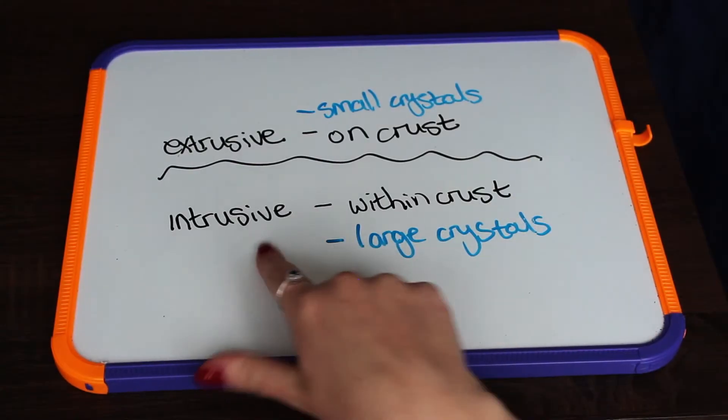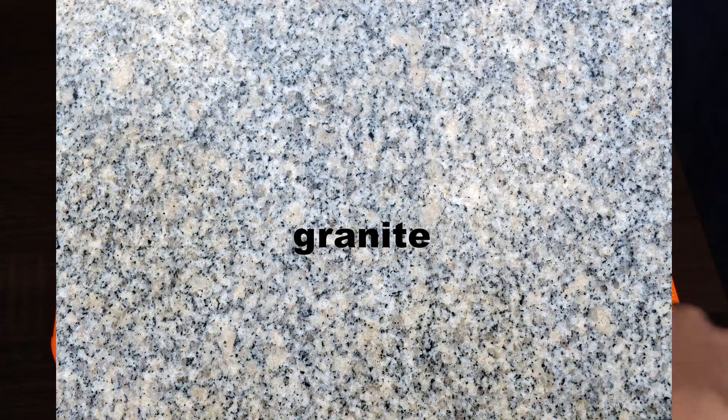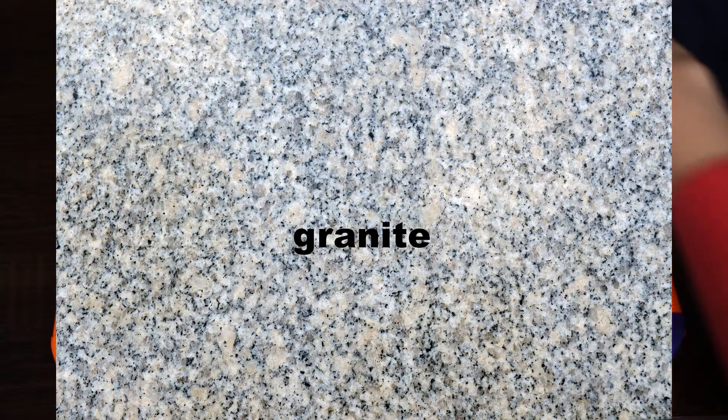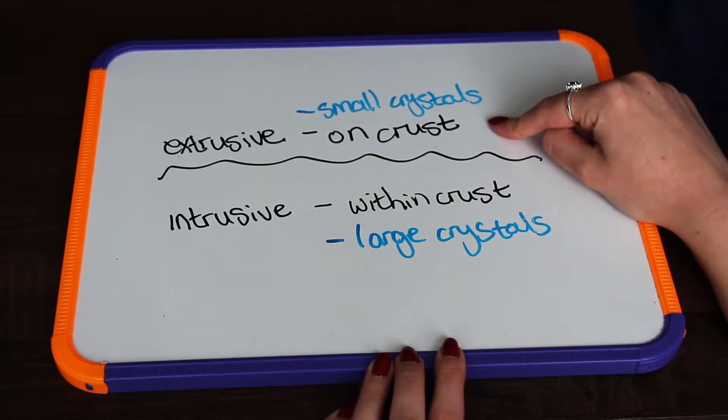A good example of an intrusive igneous rock is granite, and a good example of an extrusive igneous rock is basalt.